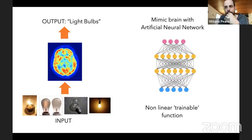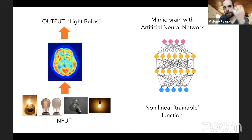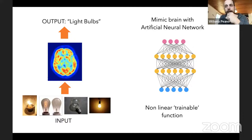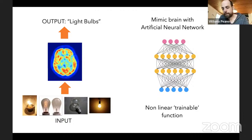Instead of hard-coding, you show the network thousands or even millions of annotated images, and little by little it learns the parameters and makes more and more accurate predictions.